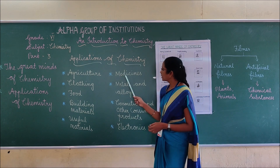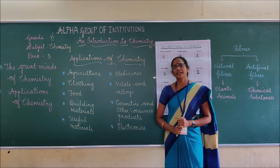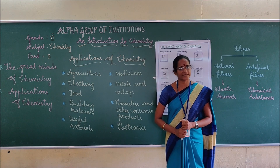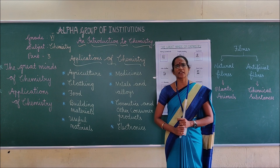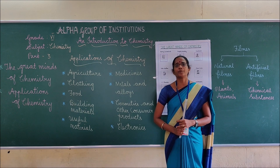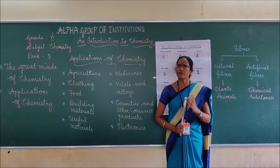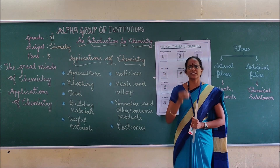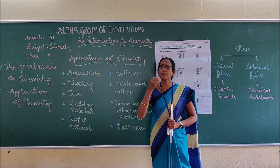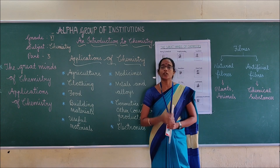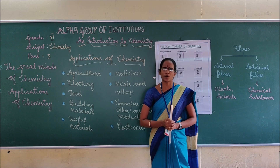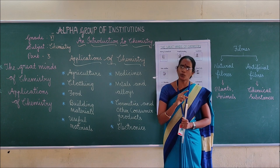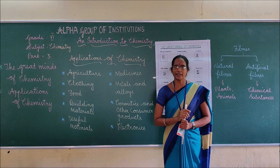Next we can move to medicines. Medicines are chemical substances used for the prevention and treatment of diseases. Some medicines like paracetamol, aspirin, penicillin, tetracycline, and ampicillin are used for the treatment of various health problems. Some chemicals have been used to eradicate polio and smallpox — 'eradicate' means to destroy completely. Both polio and smallpox are viral infections.